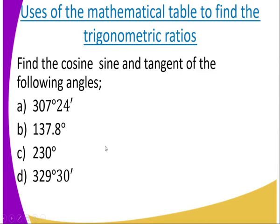We start by using the mathematical table. We have an example there. Find the cosine, sine, tangent of the following angles. I have the angle there which is 307 degrees 24 minutes. Then the other one, it is 137.8 degrees. Then 230 degrees. Then 329 degrees 30 minutes. How do I go about this?